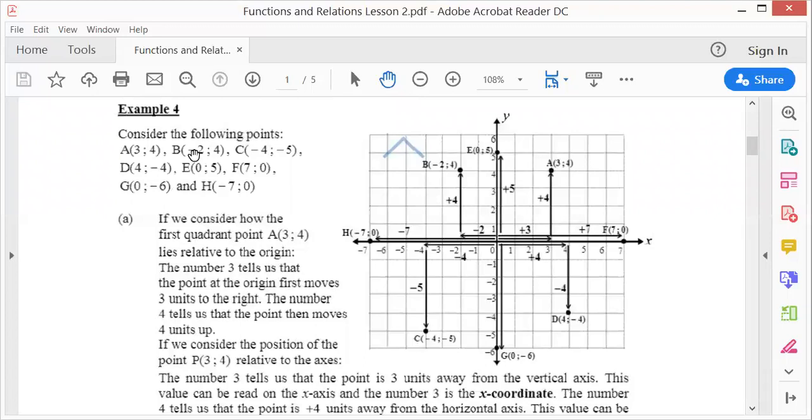Look at C, both are negative, so therefore it will have to be in the third quadrant, where x is minus 4 and y is minus 5. Same with this one, this should be in the fourth quadrant because x is positive 4 and y is negative 4.